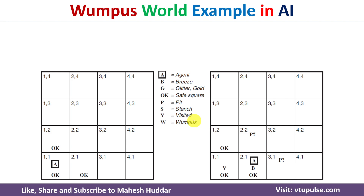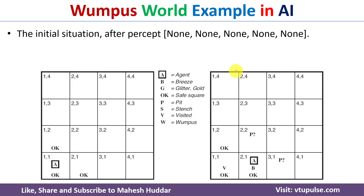To sense the breeze, stench, glitter, bump, and scream, the agent has been equipped with 5 sensors. When the agent is present in the initial square, that is (1,1), it will not sense any of these.